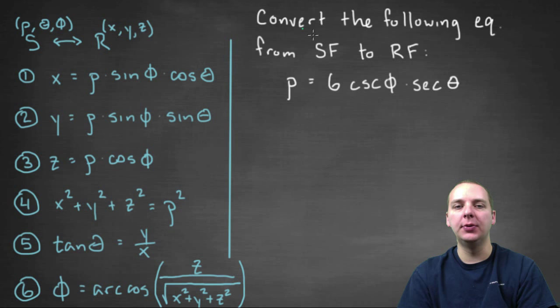In this exercise we're being asked to convert this equation from spherical form to rectangular form. So we have the equation rho equals six cosecant phi secant theta.